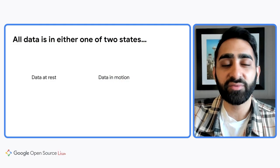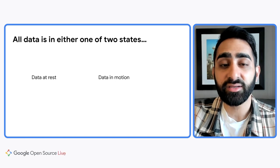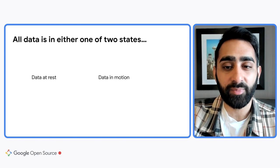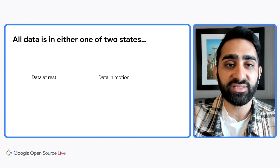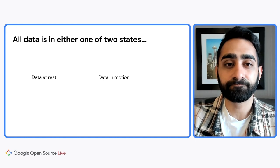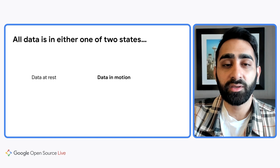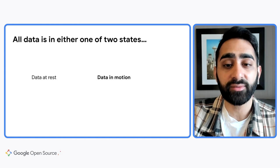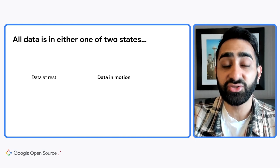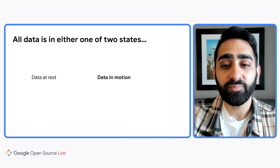All data is either in one of two states: data at rest and data in motion. Data at rest is the world of data warehouses, relational databases, blob storage, and file sets. Essentially, every application relies on these to operate. Data in motion is the world of data transport, data processing, ETL, and continuous intelligence. Data in motion is where you see all the most cutting-edge user experiences on your mobile devices and your desktops. Every developer has to have a plan for dealing with data in these two modes.